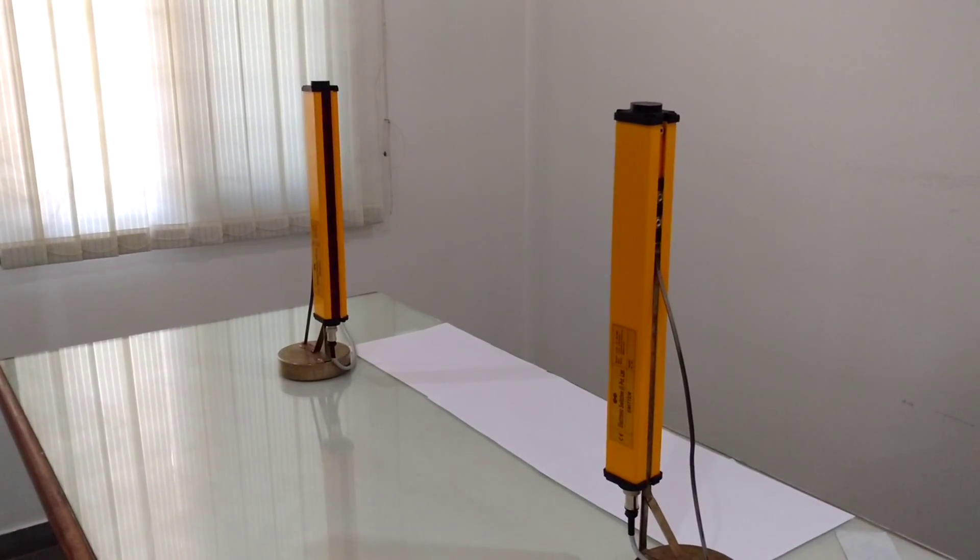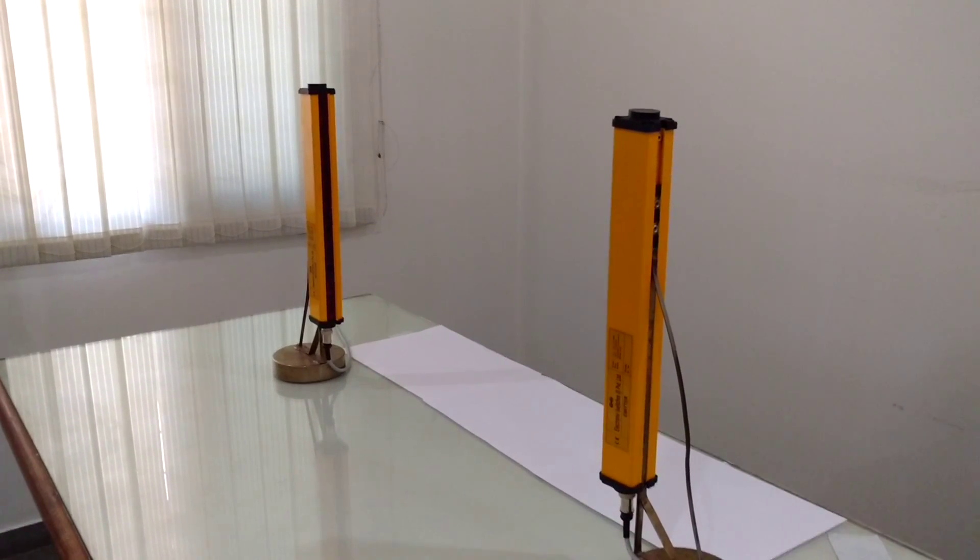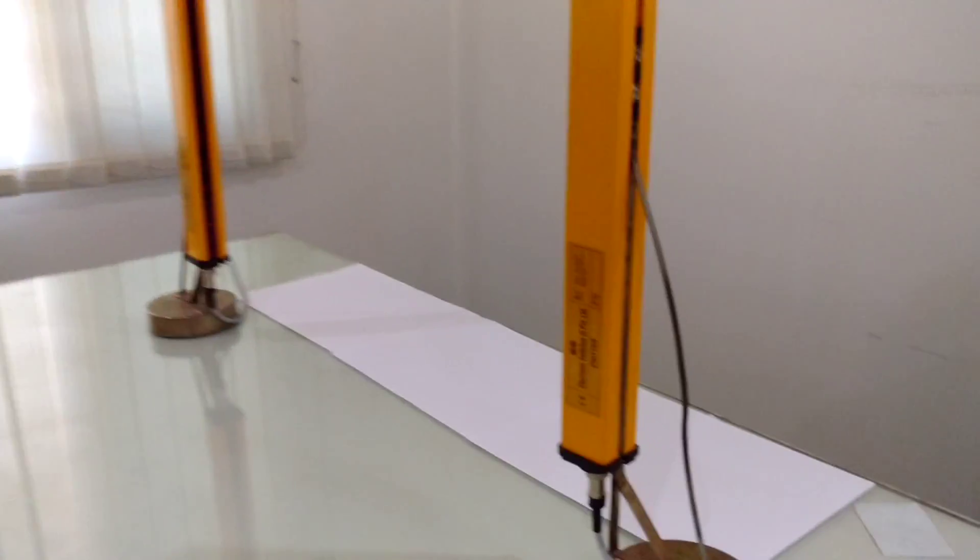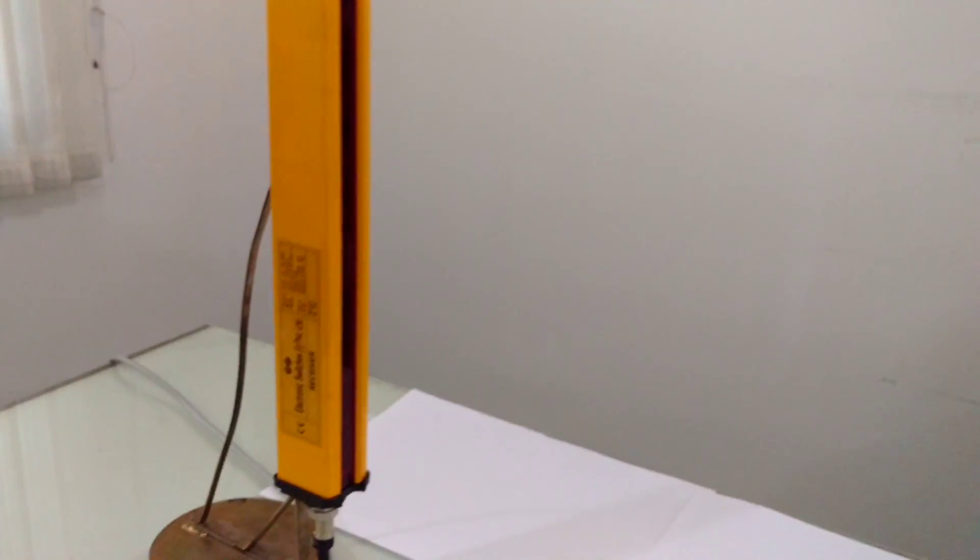Welcome to electronic switches. The video shows how to bypass the individual beams of light curtain. This is the emitter and the other one is the receiver.